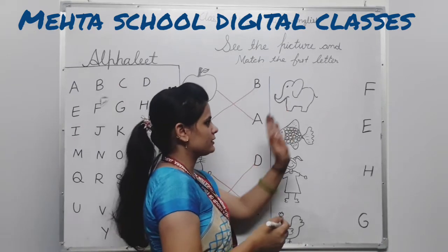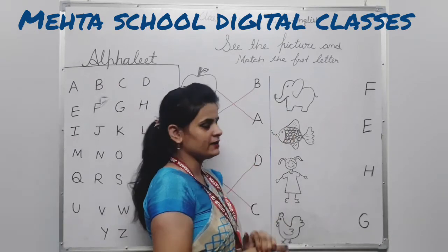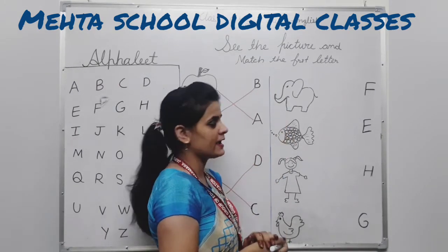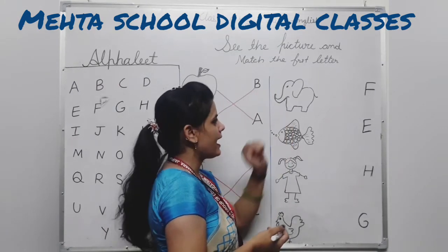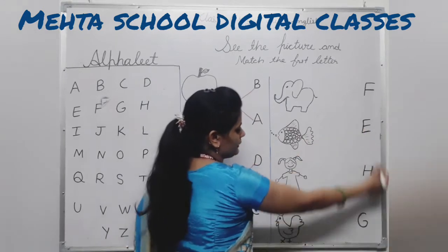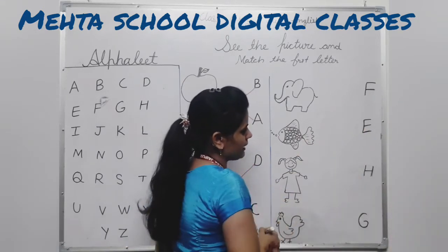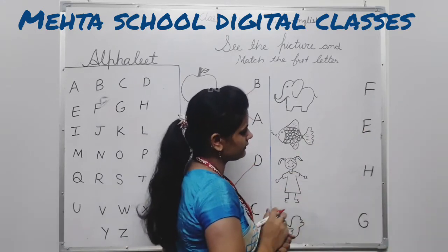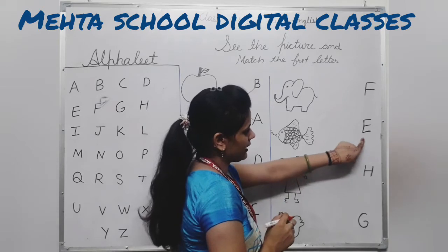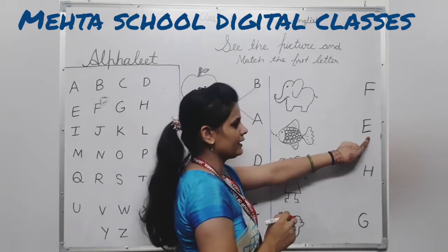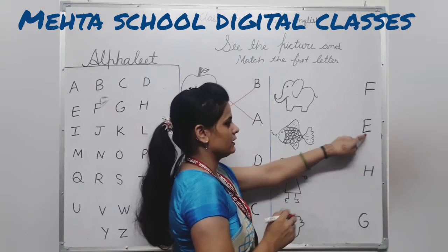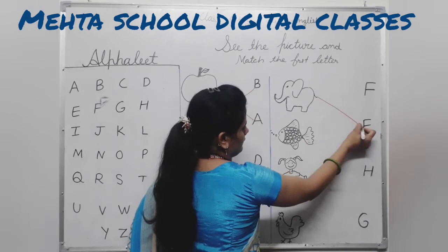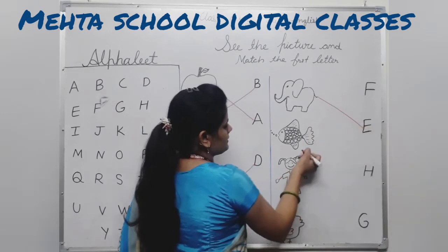Who is this? Elephant. What is this? Elephant. Here, E for elephant. E for elephant. E — this. What is this? E. Next.